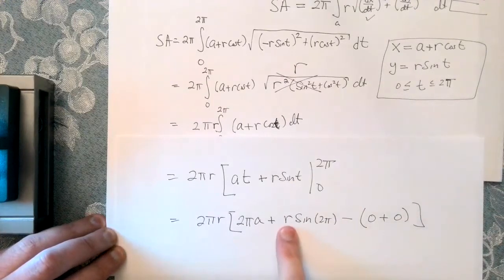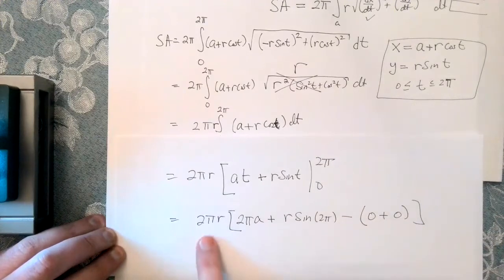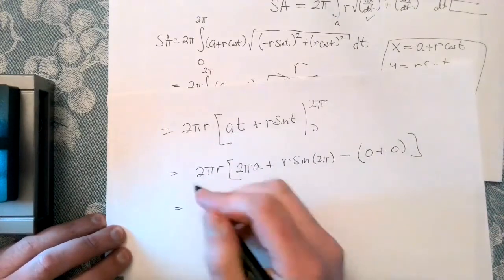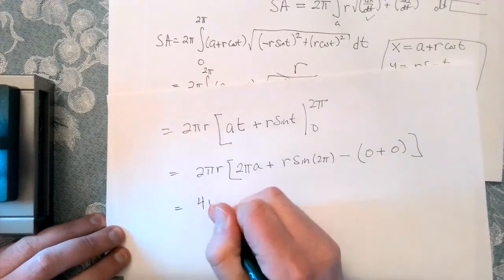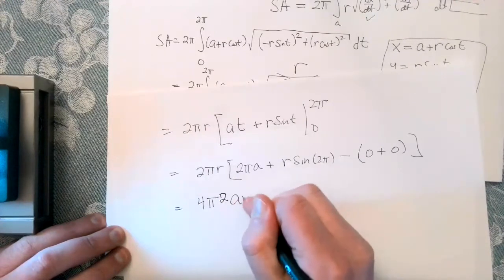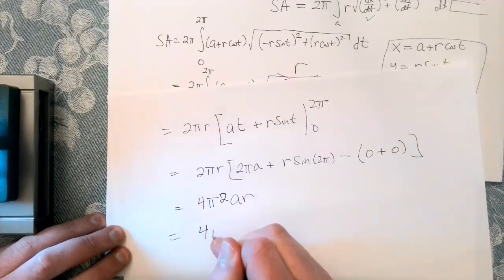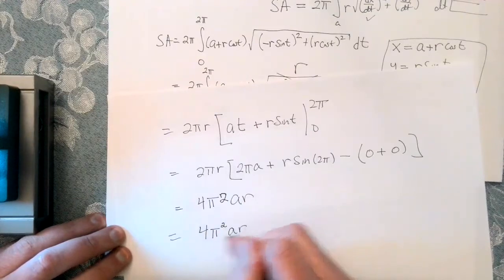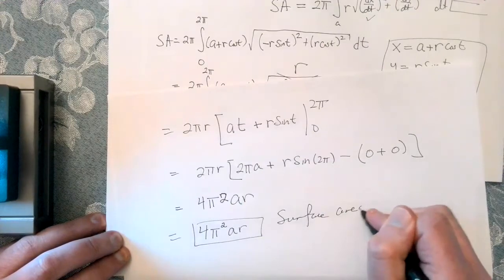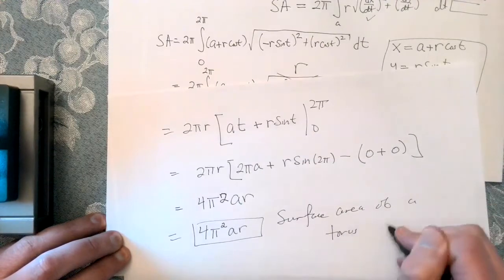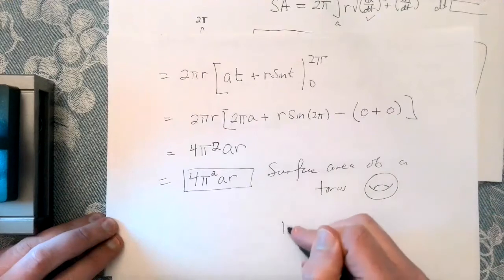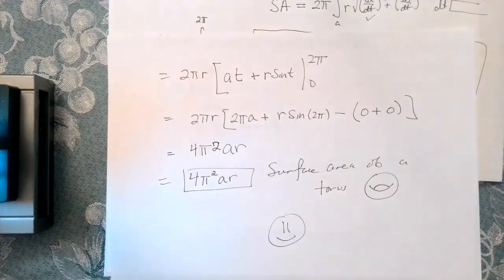But we know sine of 2 pi is 0. So this term will vanish. These will both vanish. And I'm just left with this product here. So it looks like the surface area of a torus is 4 pi squared a times r. So maybe a little bit neater. How cool is that?